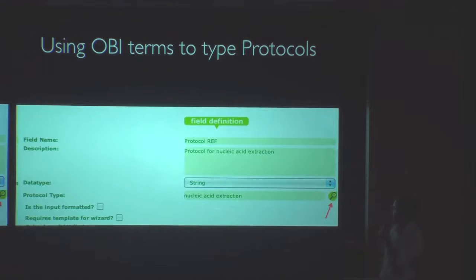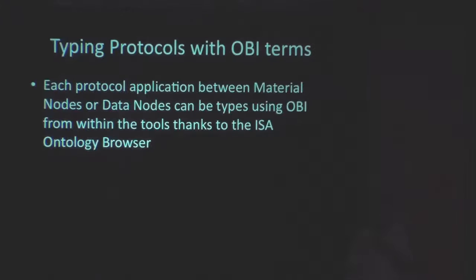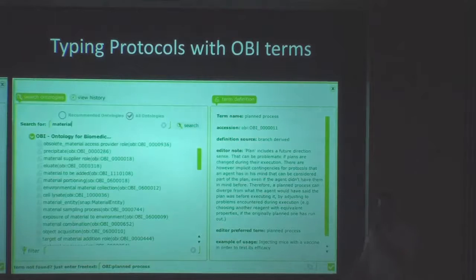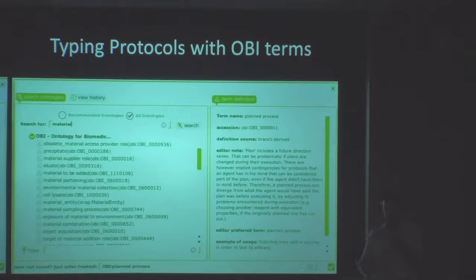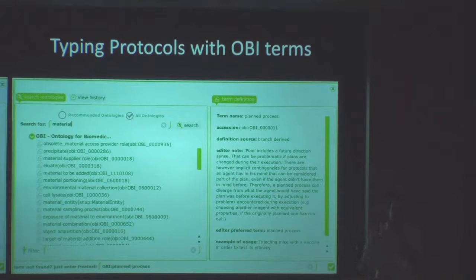We can tag every field in the configuration component. For instance, a protocol reference field can be tagged with nucleic acid extraction protocol. By clicking this button we can display within the tool the class hierarchy from OBI, see all the list of classes, and start validating the workflow — detecting errors where people have poorly annotated their protocol between two nodes. For example, we can detect cases where a protocol has been set up that is not the correct type for that position.